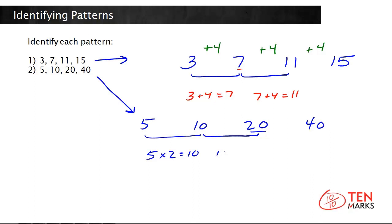Compare the next two numbers. 10 times 2 equals 20. And you could check the last one just in case. 20 times 2 equals 40. So, this pattern is made by multiplying by 2 each time.